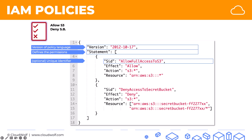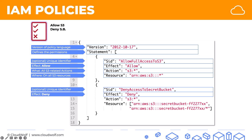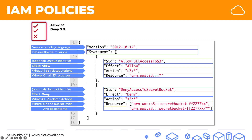The first part allows S3 access. There's an optional unique identifier, then the effect of this part is Allow. Allow what? All S3-related actions. Allow where? On all S3 resources. The second part is to deny that bucket. There's an optional unique identifier, then the effect is Deny. Deny what? All S3-related actions — the asterisk after S3 is a wildcard meaning any kind of S3 action. Deny where? First, on the bucket itself, so you can't make changes to the bucket. And second, on any of the contents inside the bucket, so you can't view, put, or edit anything inside it.